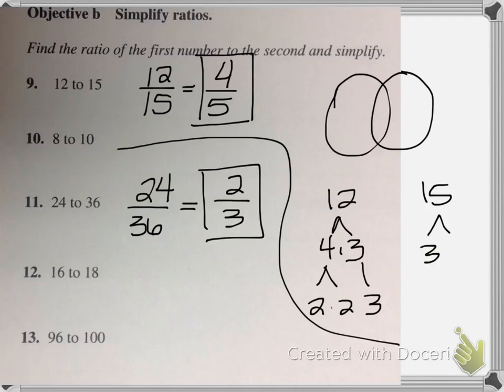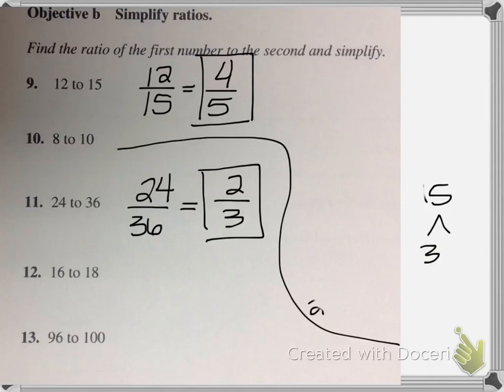So what if we did that same thing for the 24 and the 36? What would my circles, or what would my prime factorizations look like? Let's look at that.